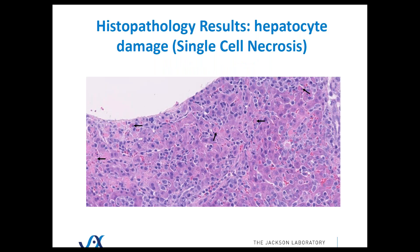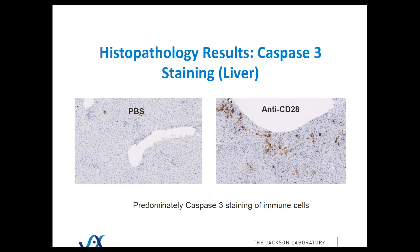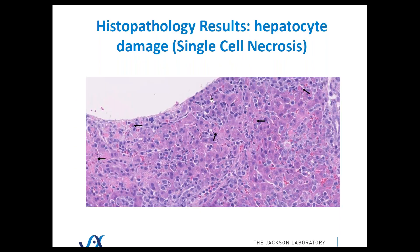Here we're looking at single cell necrosis of hepatocytes occurring in this experiment with anti-CD28. The arrows indicate some of the cells you see. There's obviously significantly more of those going through necrosis as well. So we're seeing liver cells dying.